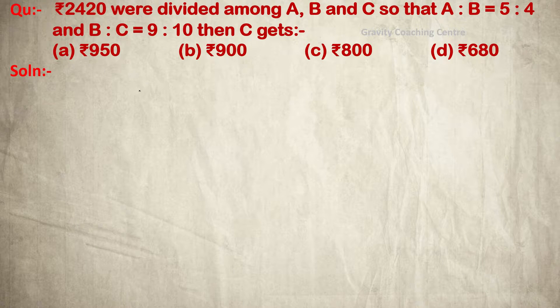The question states: ₹2420 were divided among A, B, and C so that A:B = 5:4 and B:C = 9:10. Then C gets? In this question, ₹2420 amount is divided among A, B, and C.